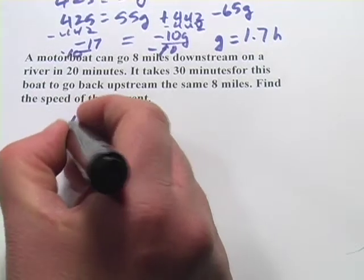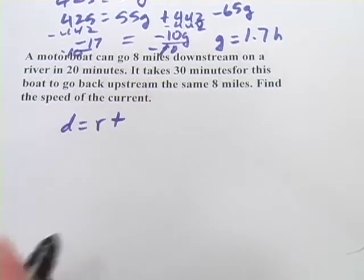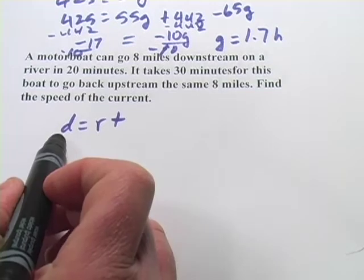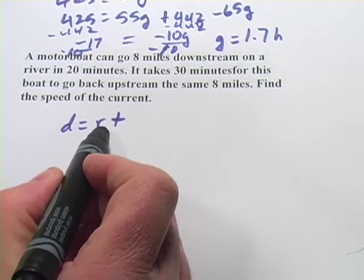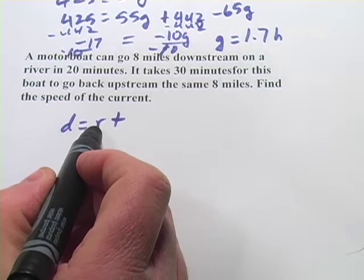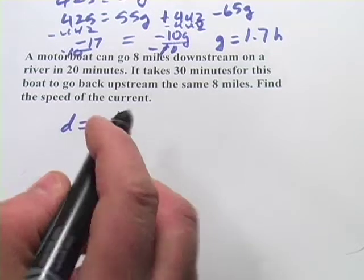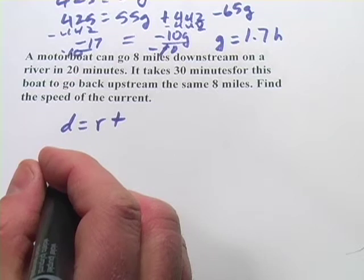So the way to think about this is with our same dirt formula, distance equals rate times time. The distance in both cases is going to be the same. In the first one, when they went downstream, the rate was, well, you can think about it this way.